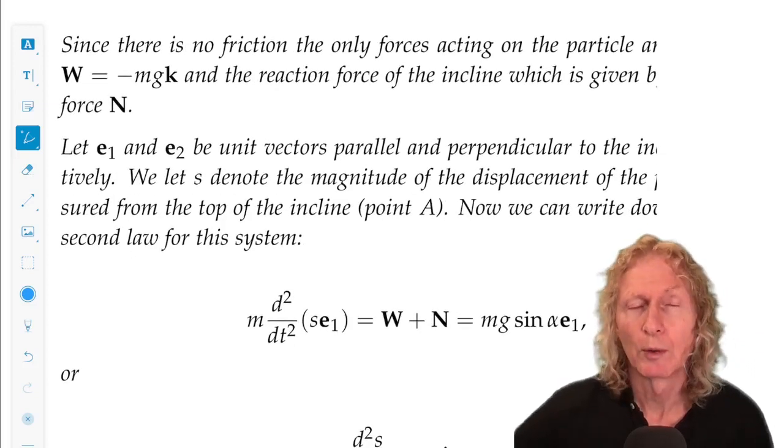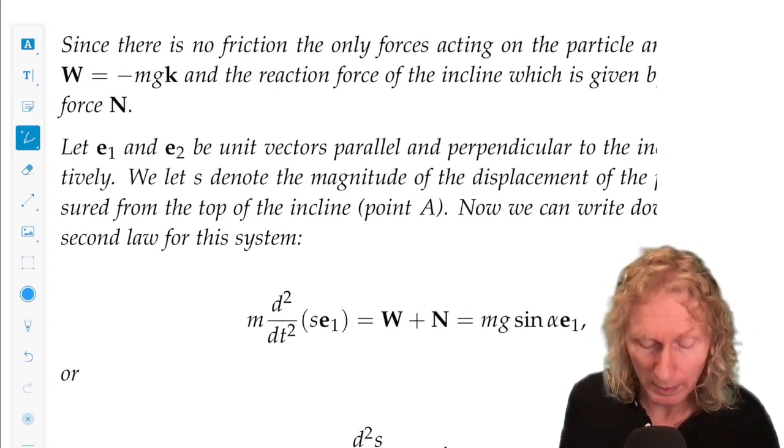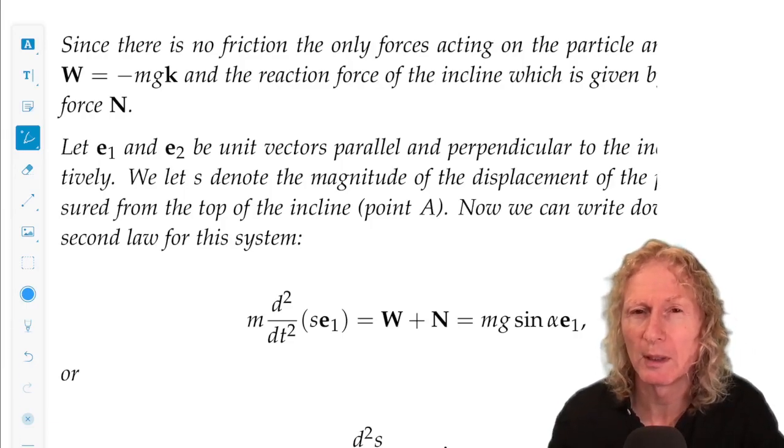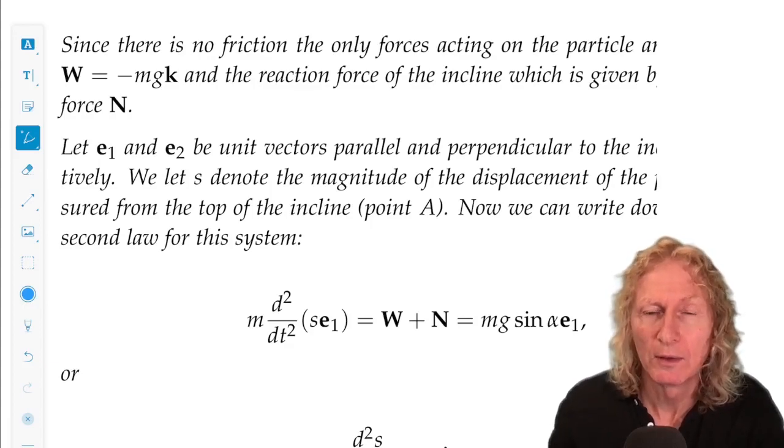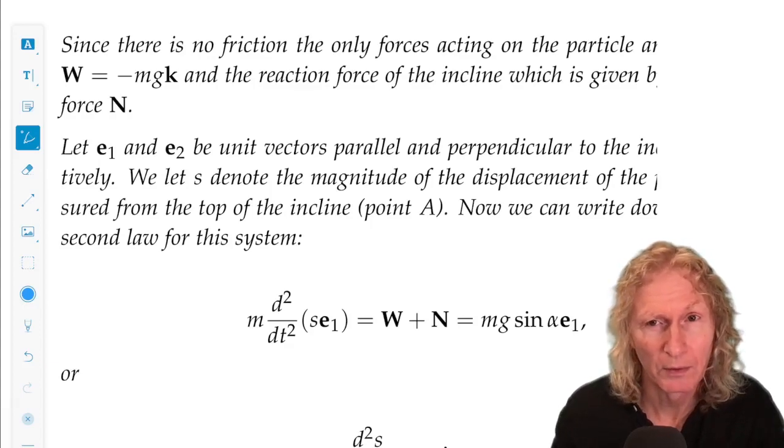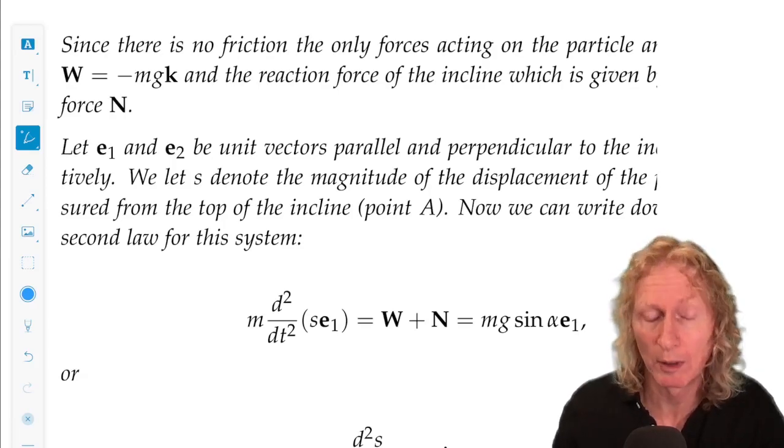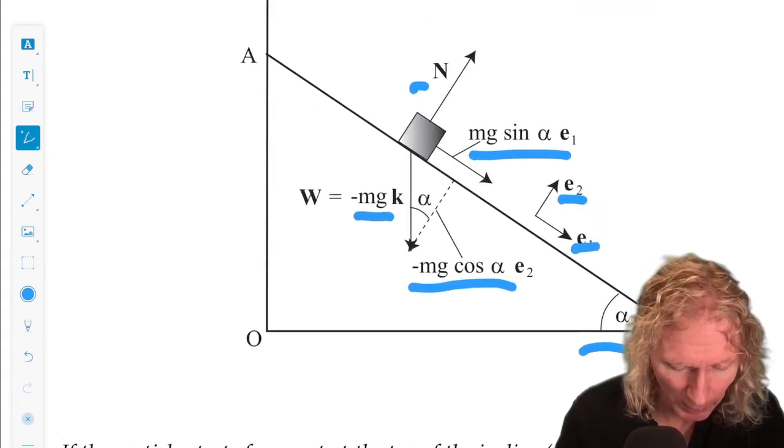The particle moves in the direction e1 that I've just defined. And let s be the distance along the plane, distance along the direction e1, and s would be zero at the top of the plane, at the point A.